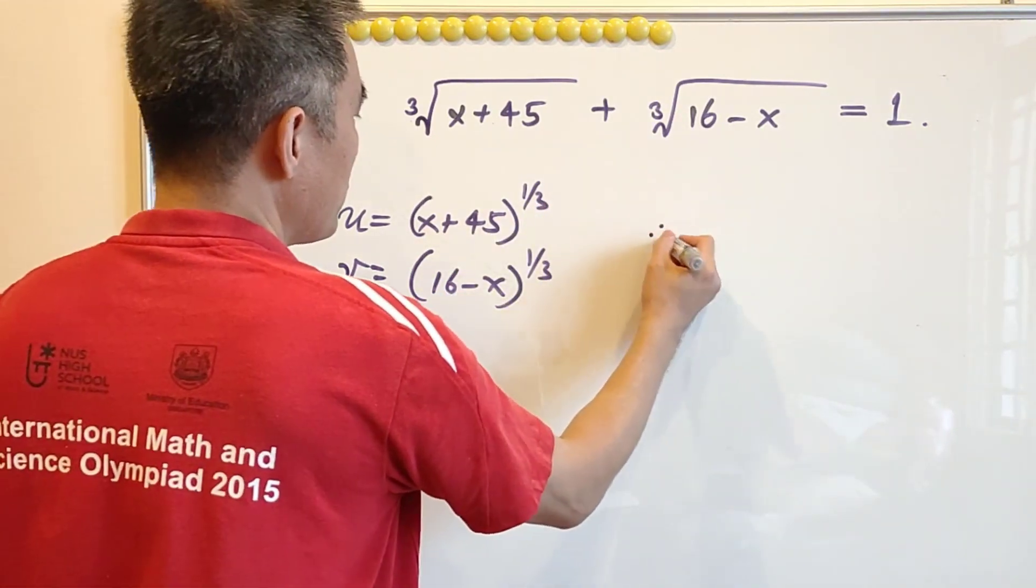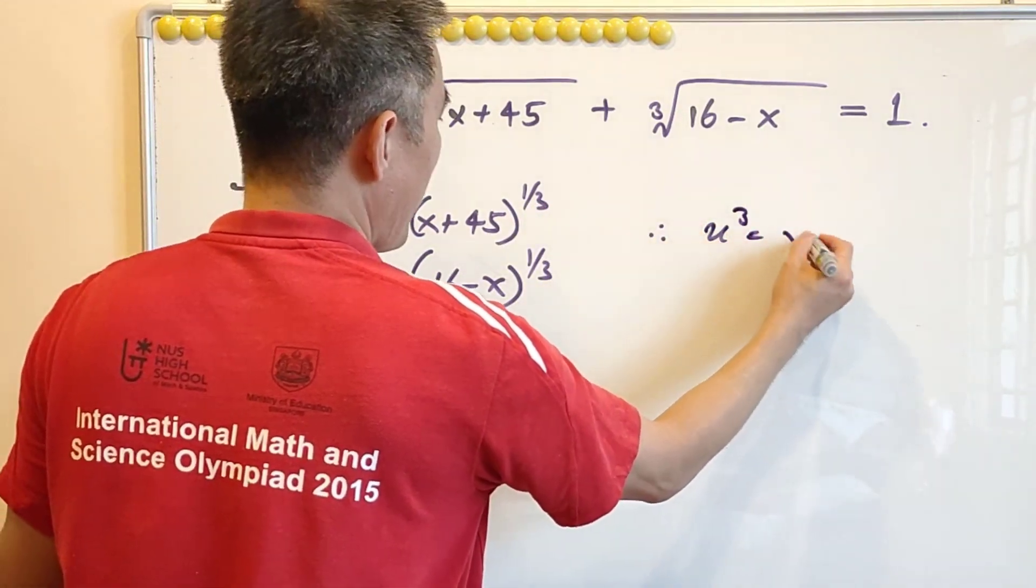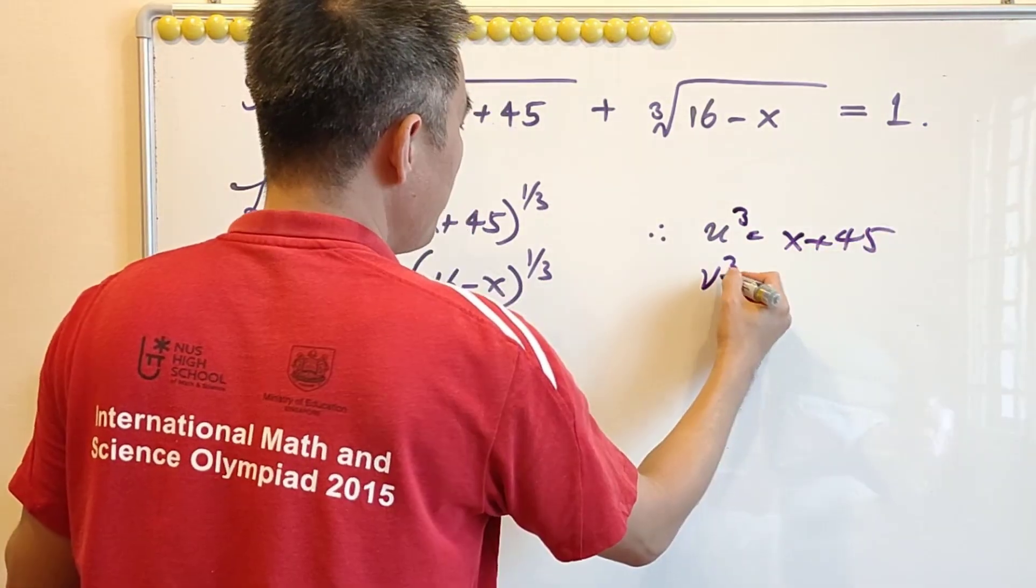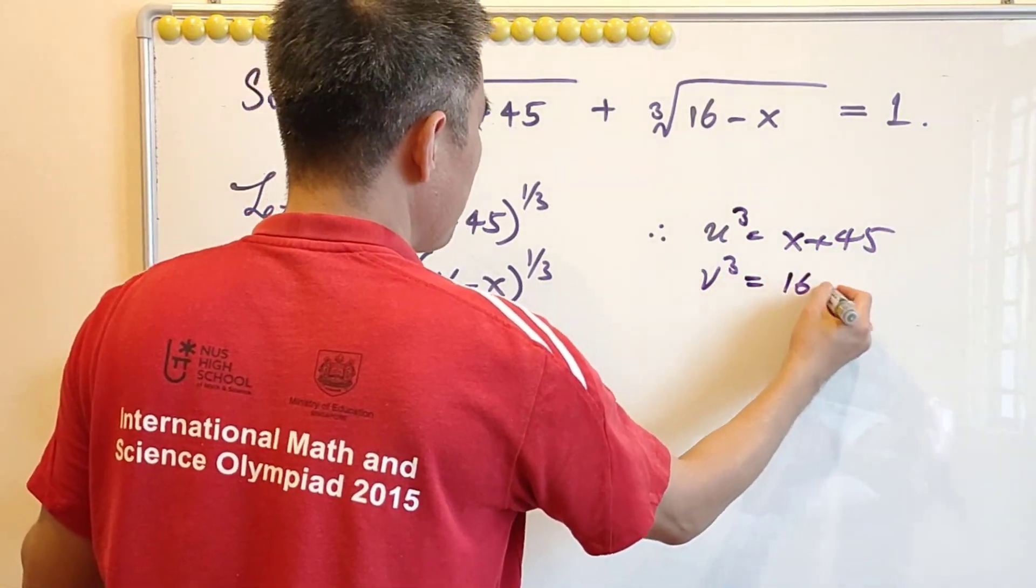With this substitution, we will know that u power 3 equals to x plus 45 and v power 3 equals to 16 minus x.